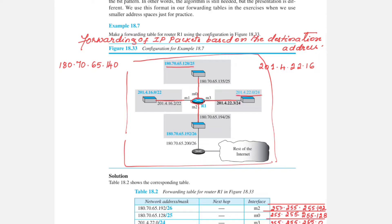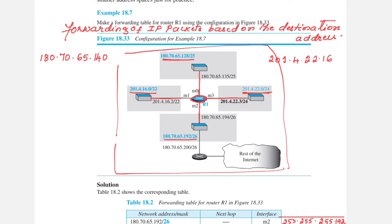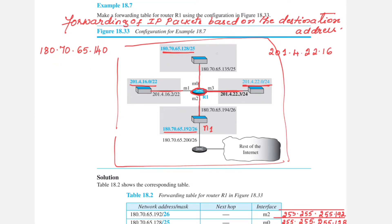The first network is 201.4.16.0/22, the second network is 180.70.65.192/26, the third network is 201.4.22.0/24, and the fourth one is 180.70.65.128/25. We label these four networks in short notation as N1, N2, N3, and N4.